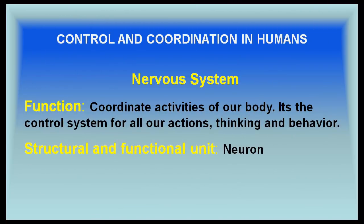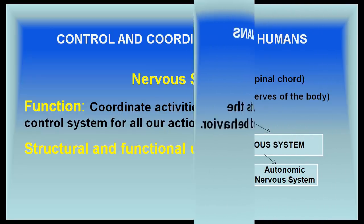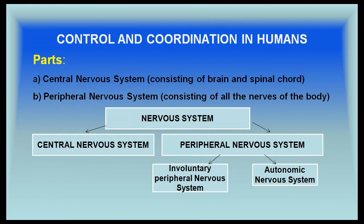The nervous system coordinates the activities of the body. It is the control system for all our actions, thinking, and behavior. The structure and functional unit of the nervous system is a neuron. The nervous system consists of the central nervous system, which includes the brain and spinal cord, and the peripheral nervous system, consisting of all the nerves of the body.